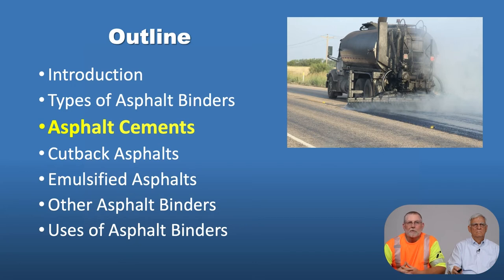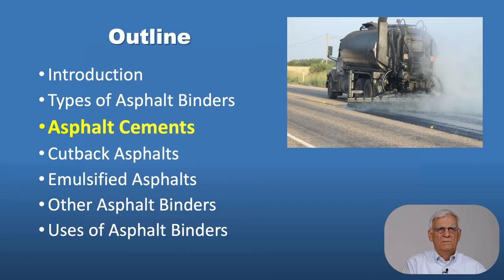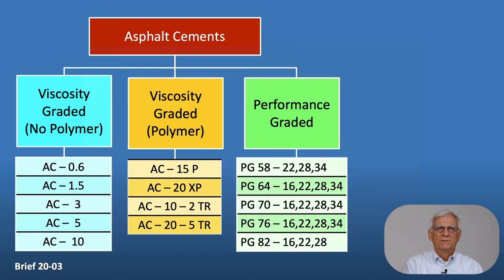The first category is asphalt cements, then we will move to cutback asphalts and then emulsified asphalts. These are broad categories of asphalt binders available for the various construction and maintenance operations. In asphalt cements, these are identified as viscosity graded with no polymer, viscosity graded with polymer, and performance graded. Under viscosity graded without any polymer, they're graded from an AC 0.6 to an AC 10.